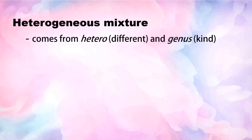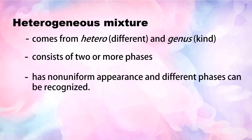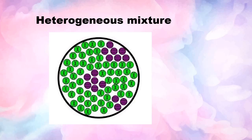Heterogeneous mixture comes from 'hetero' which means different, and 'genus' which means kind. A heterogeneous mixture consists of two or more phases. It has a non-uniform appearance and different phases that can be recognized. The components of a heterogeneous mixture are visible to the unaided eye and are obviously different from one another.